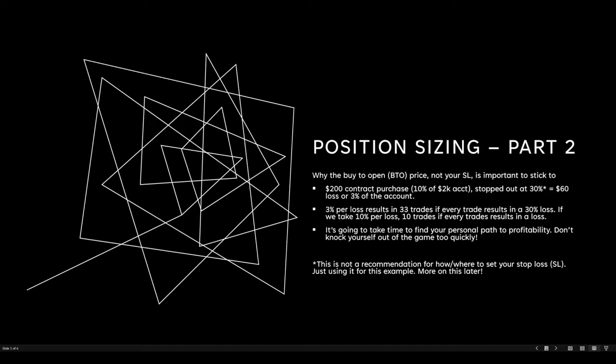To illustrate: if you use a $200 contract purchase — 10% of a $2,000 account — and your trade plan gets invalidated causing a 30% loss on those contracts, that's a $60 loss, or roughly 3% of the account. In a worst-case scenario where you take nothing but losses, limiting yourself to 3% per trade allows for 33 total trades.